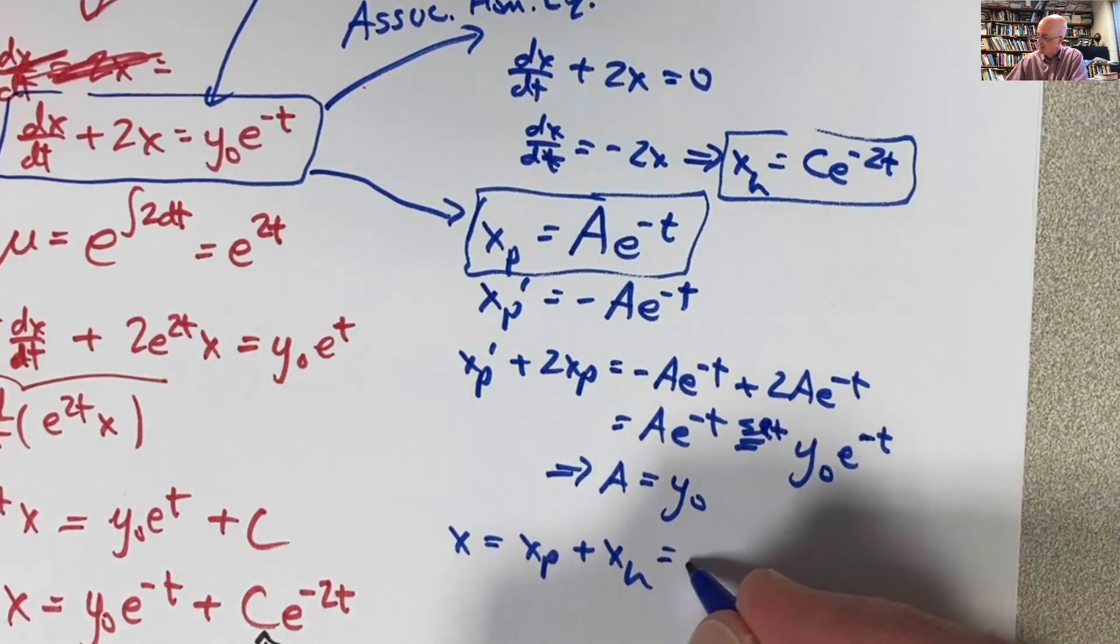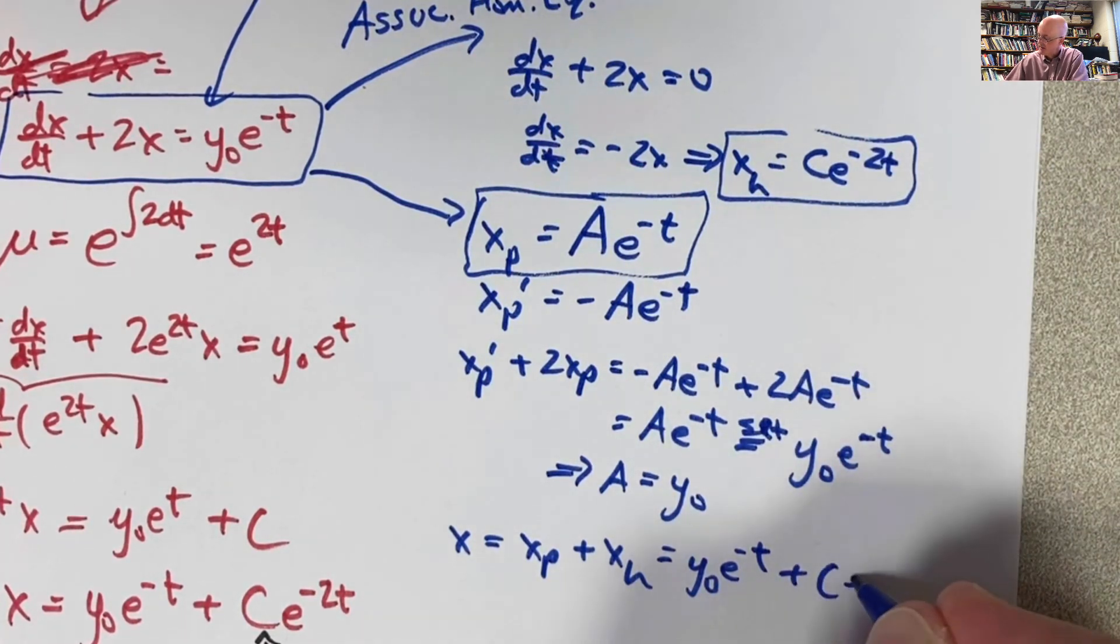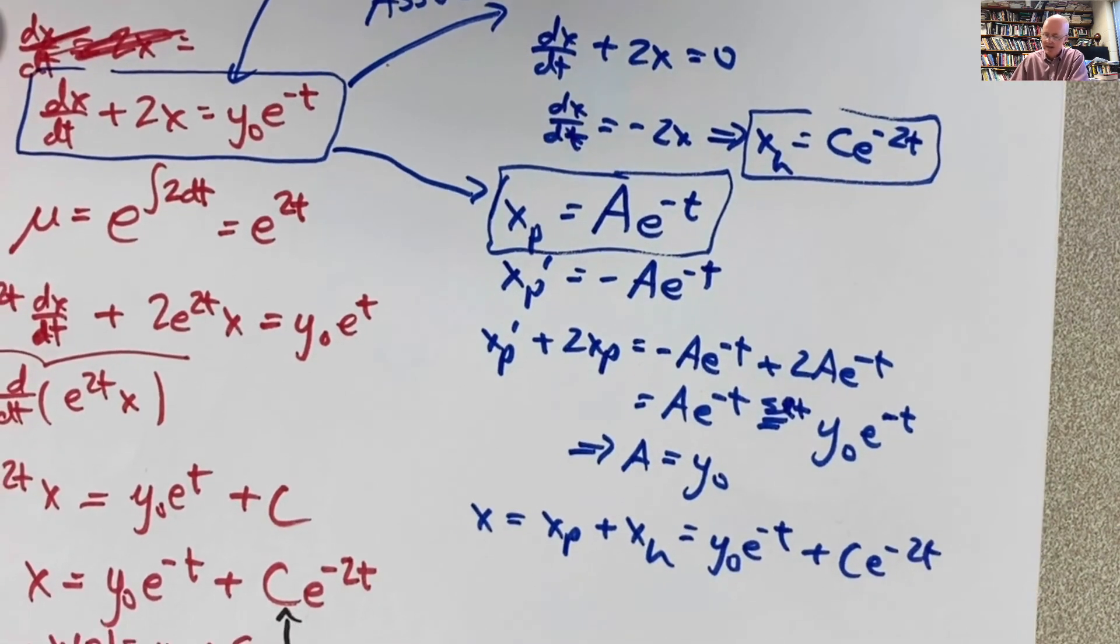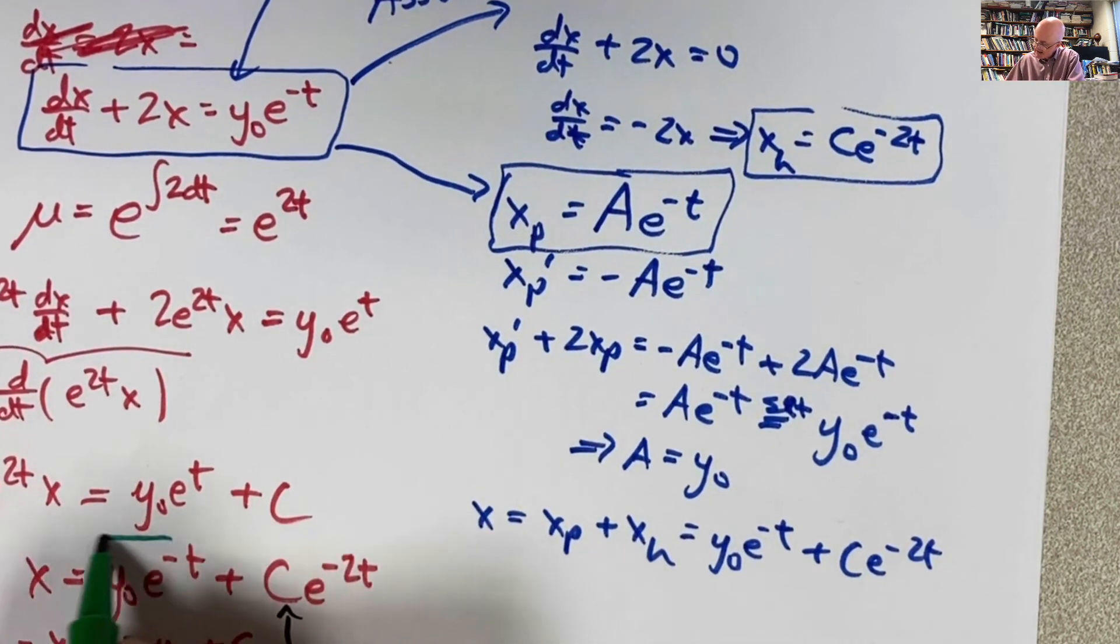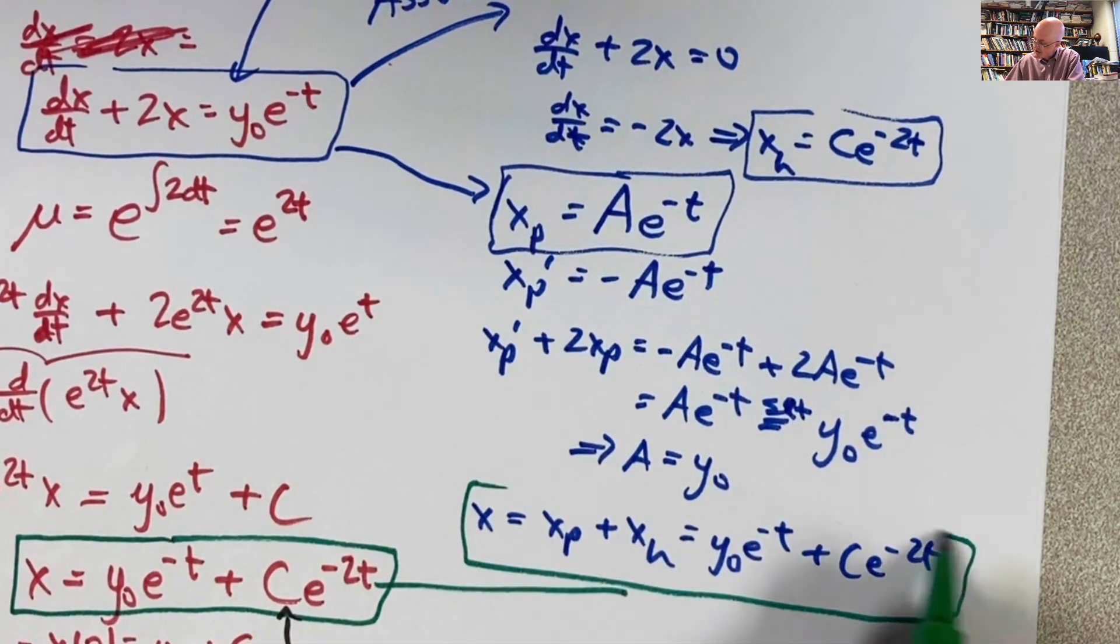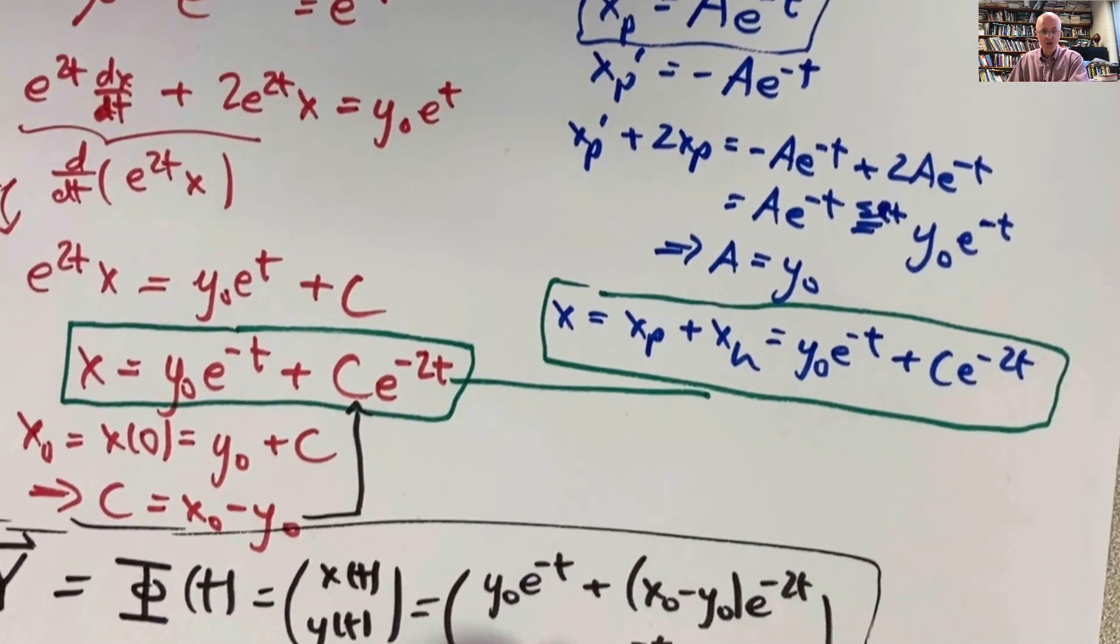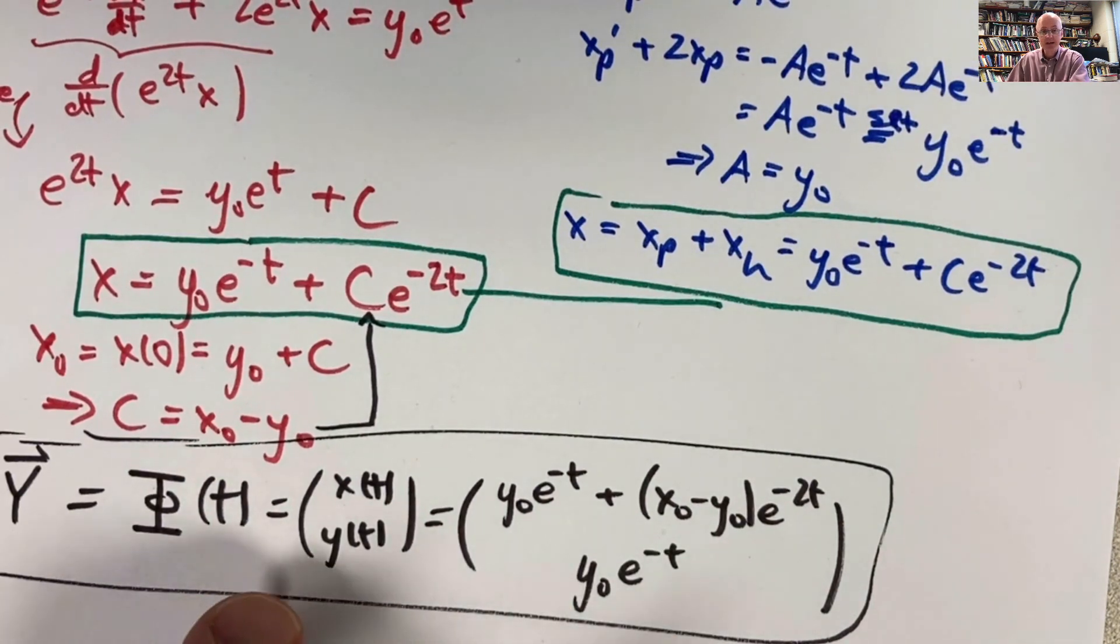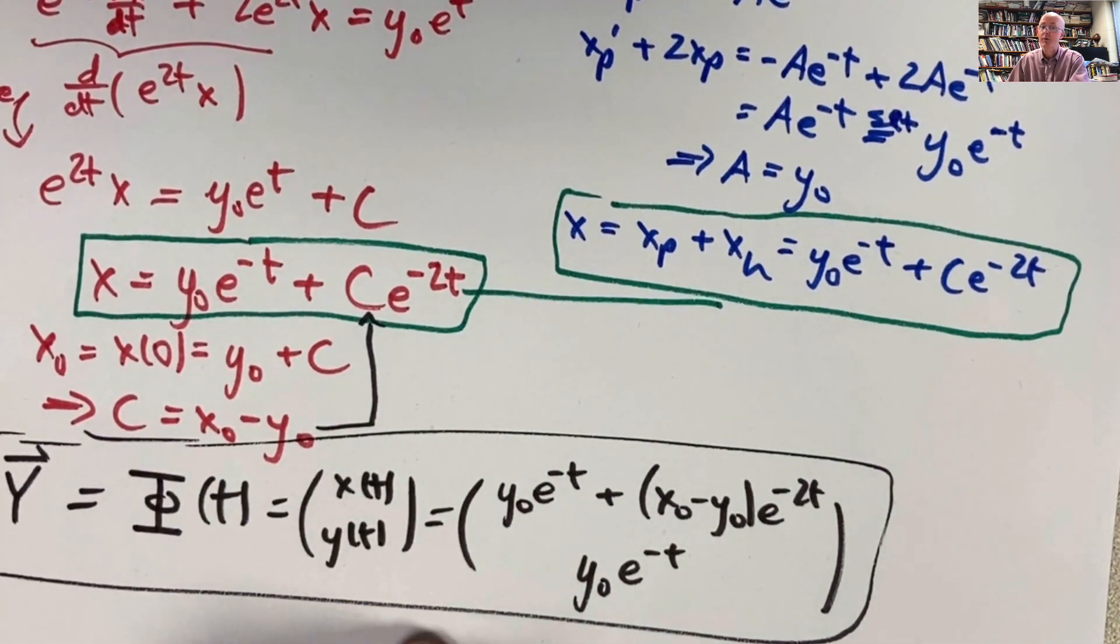xp is this with a equal to y sub 0. We get y sub 0 e to the negative t. Then we get our arbitrary constant, c times e to the negative 2t. Does this match what we got with integrating factors? That solution was right here. Yes, they match. These two things match. I got the same thing I got with integrating factors. You can also go down here and double check that we get the exact same final particular solution to the initial value problem by ultimately solving for how c depends on both x0 and y0. And you get this for the solution, the unique solution of the initial value problem.